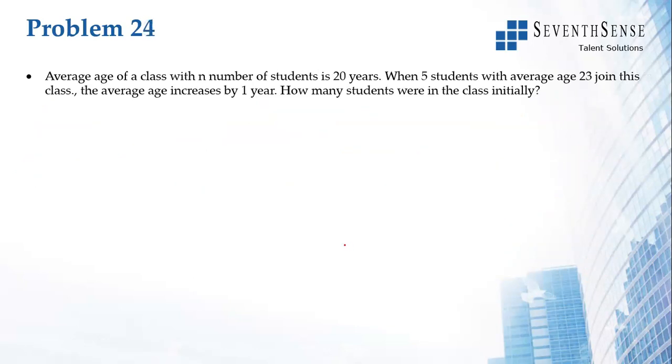Problem 24: There is a class with n number of students. Their average age is 20, so total age is 20n. Five students with an average age of 23 join. The average of the class increases by one year.